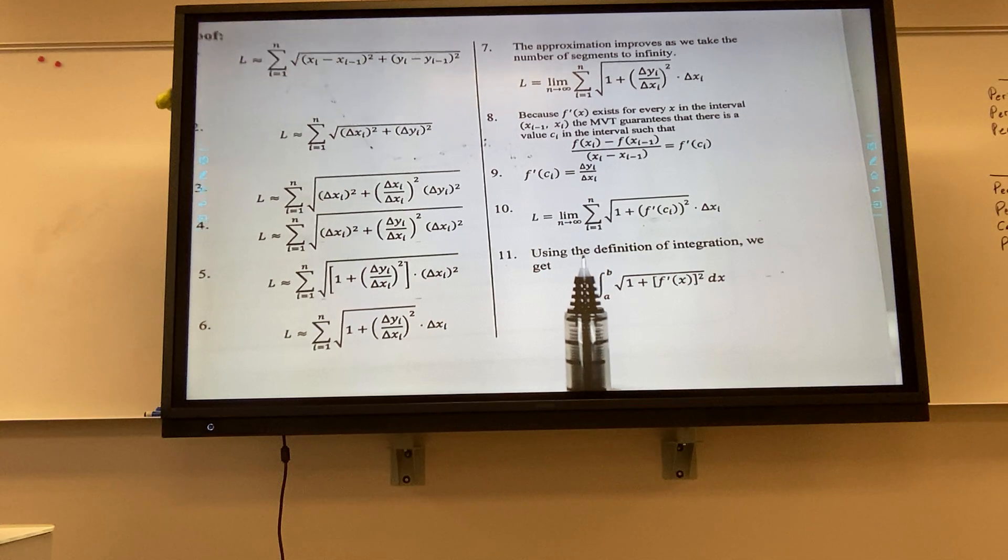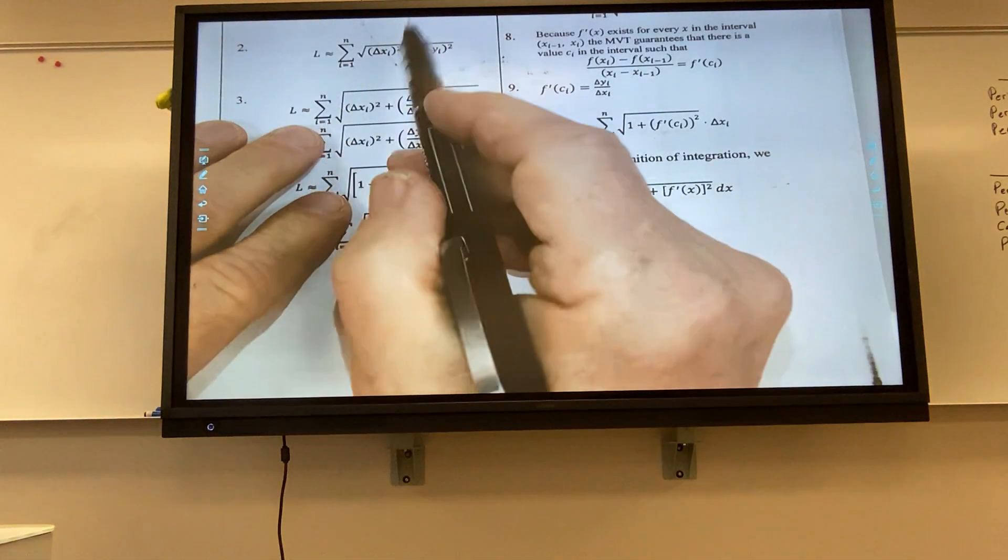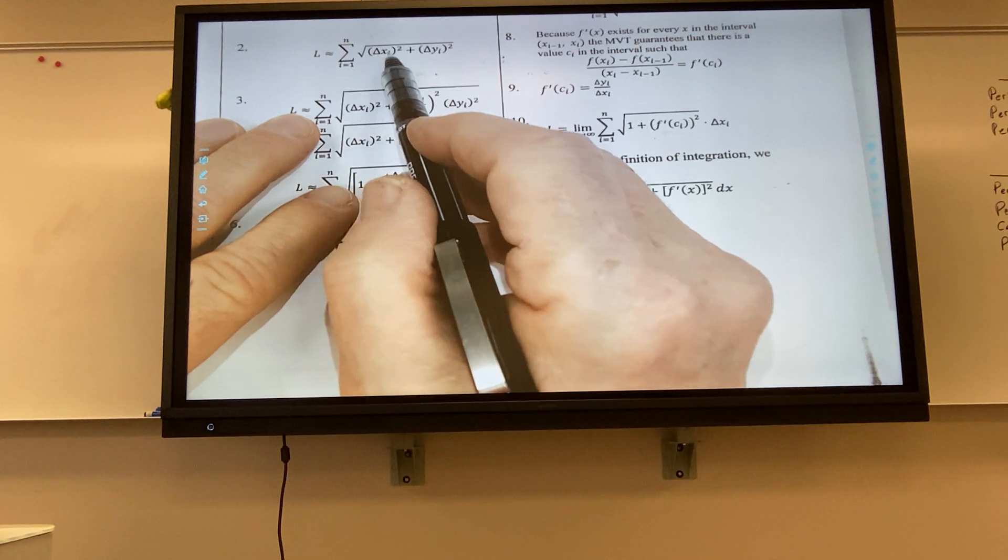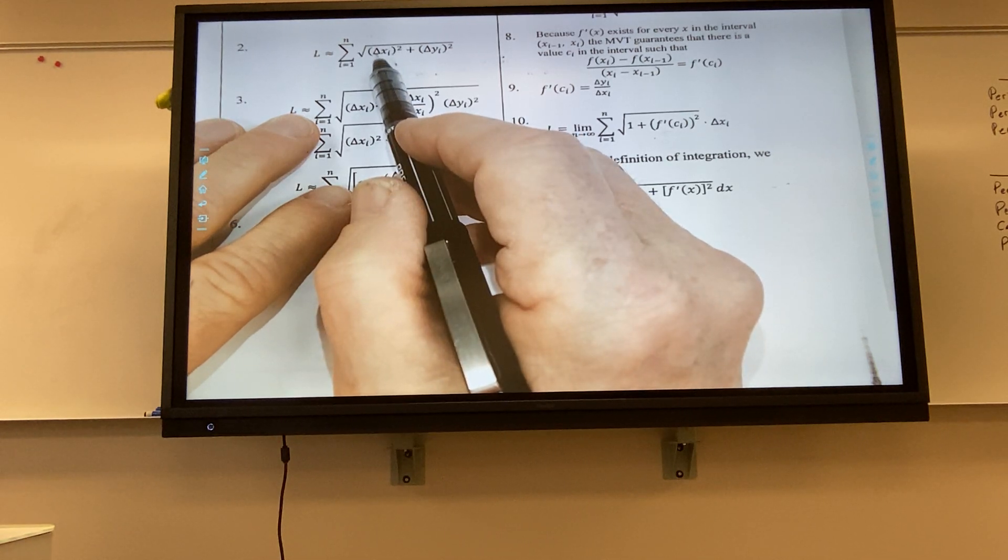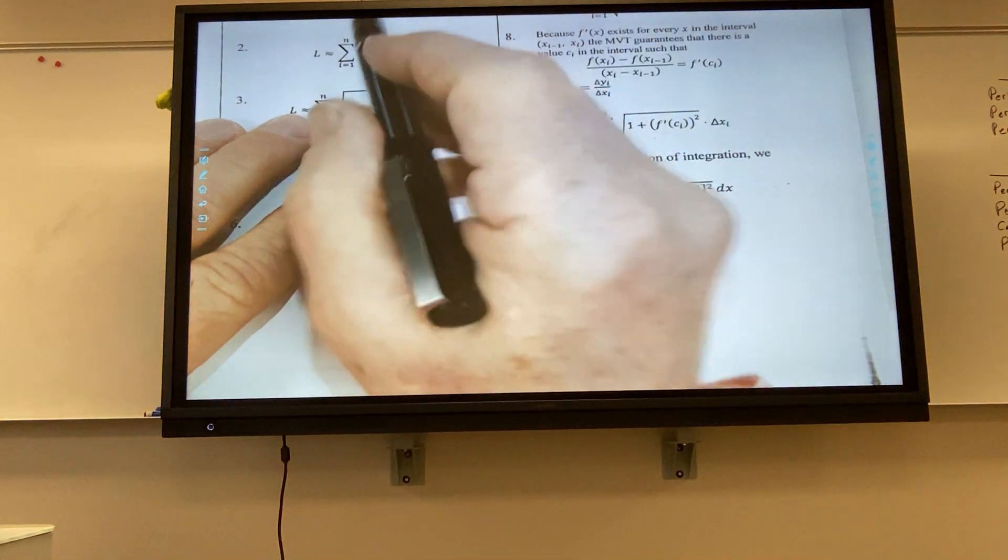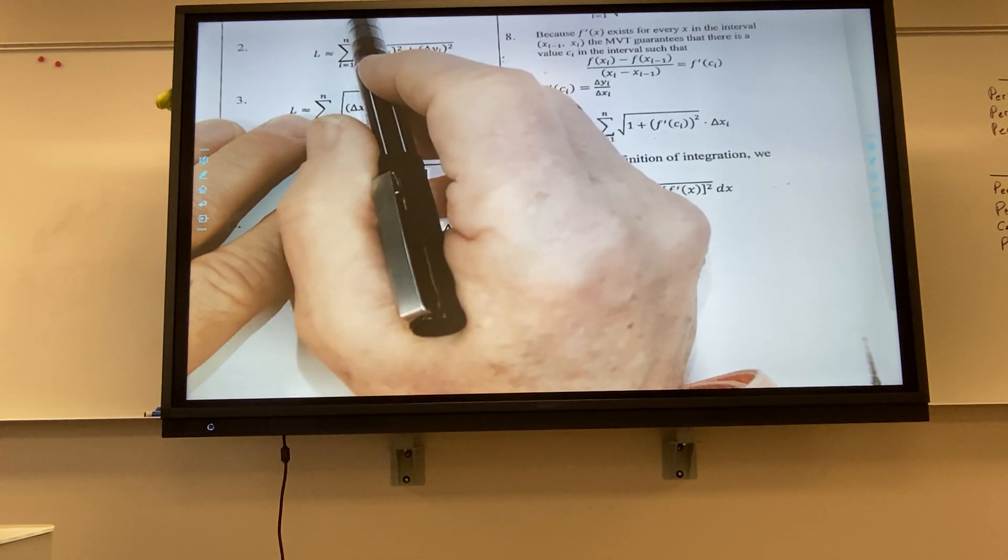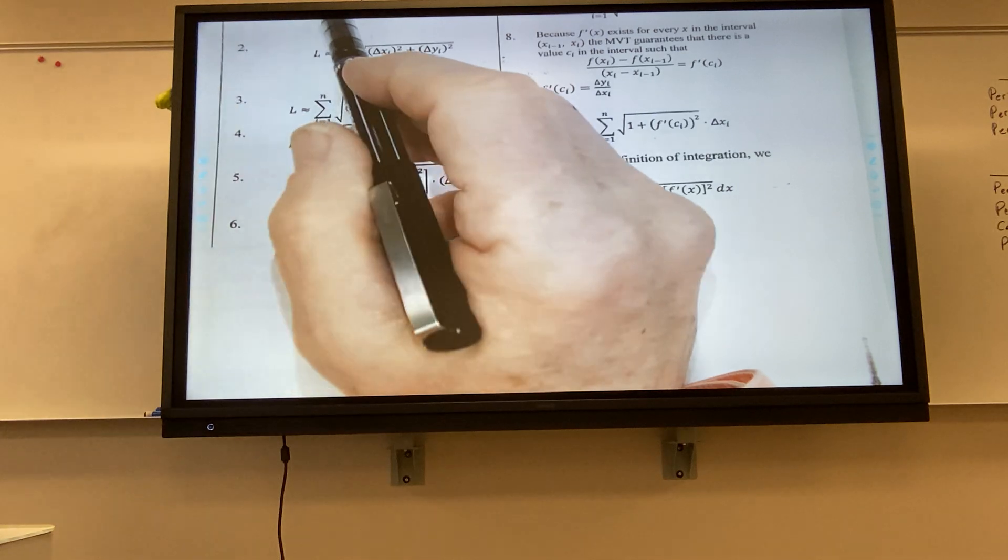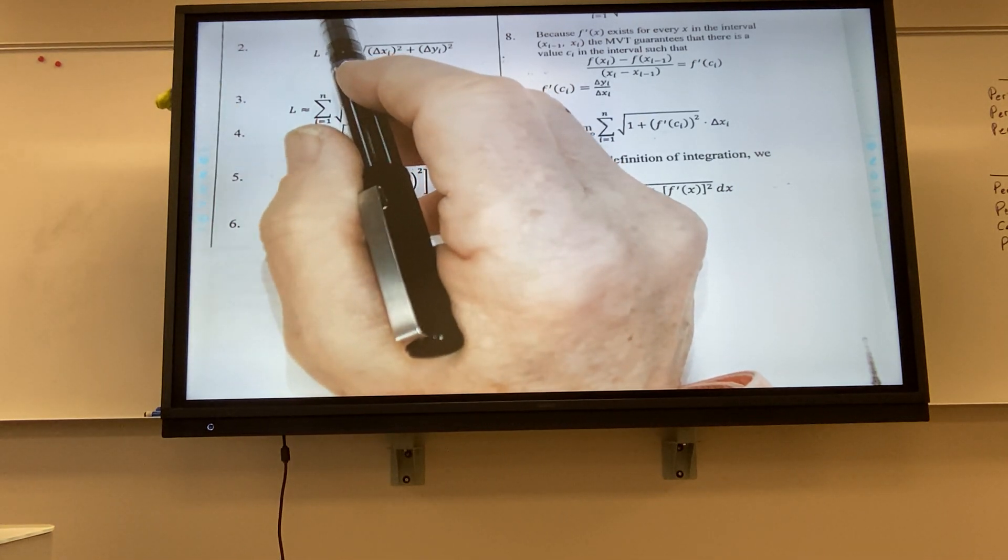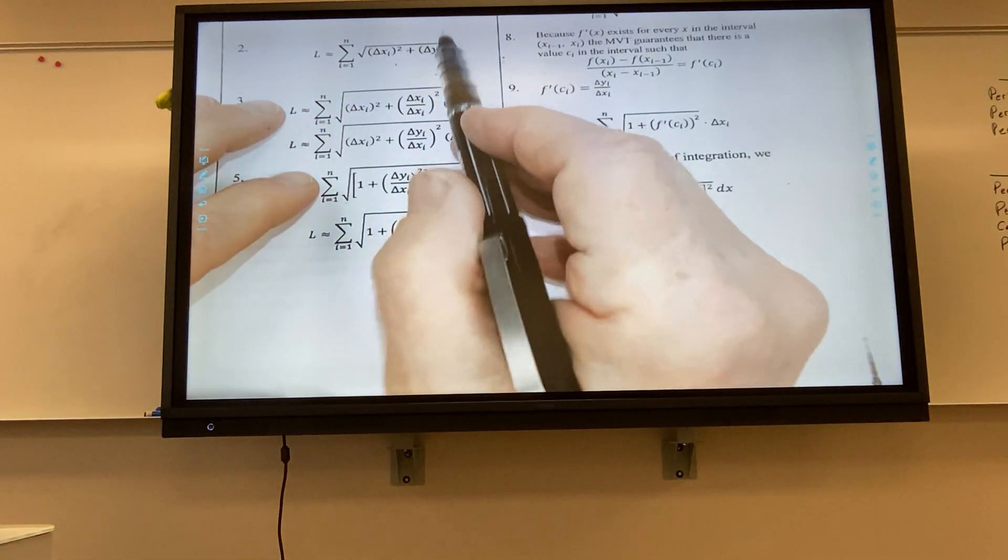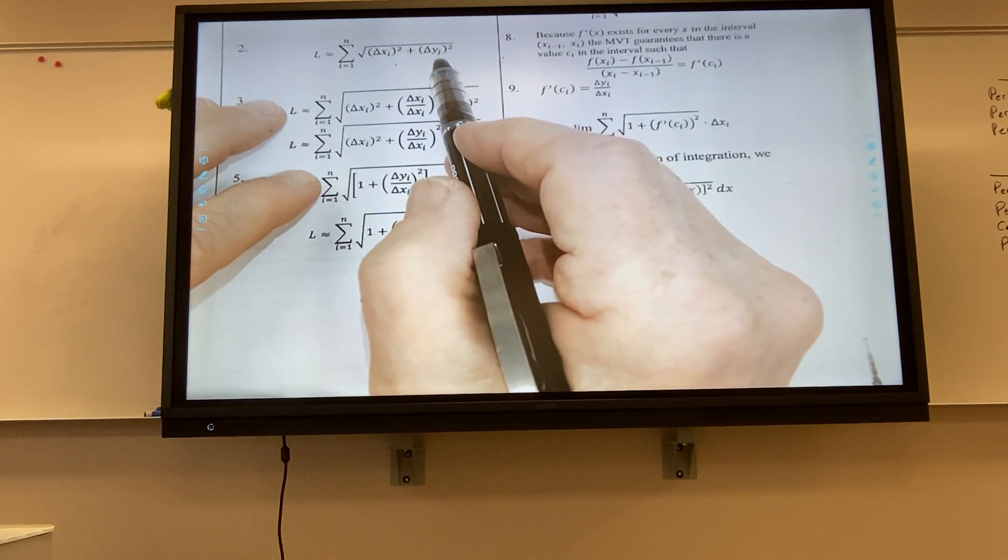Then the next thing we do, well, we can write it as all those distances are what we call the change in x. And i just means, hey, this is the first change in x. This is the second change in x. This is the third. This is the fourth. So the fourth change in x would be the difference between x sub 4 and x sub 3. The fifth change of x would be between x sub 5 and x sub 4. And likewise with the y. So we're okay with that.